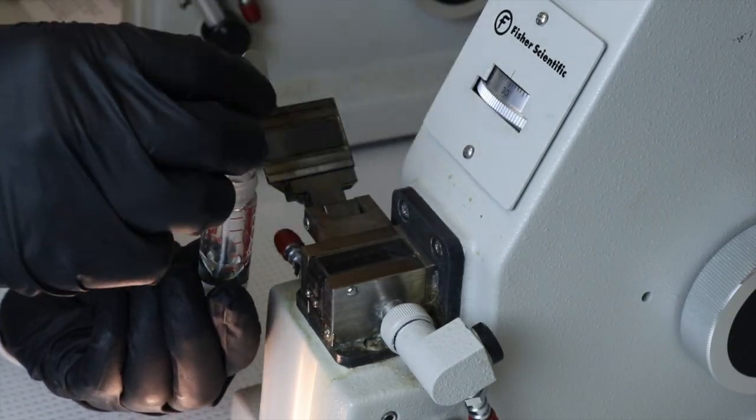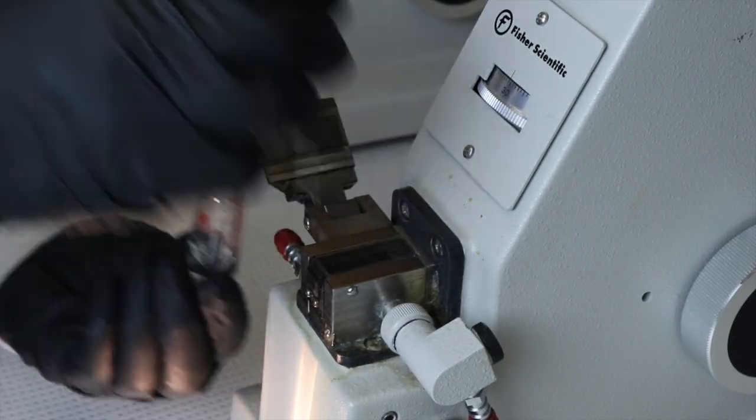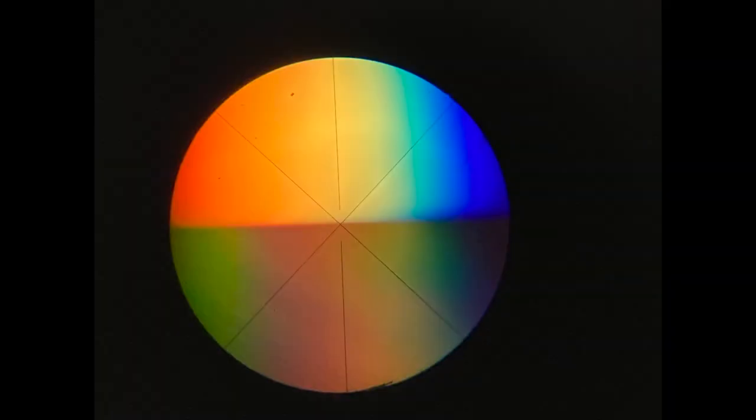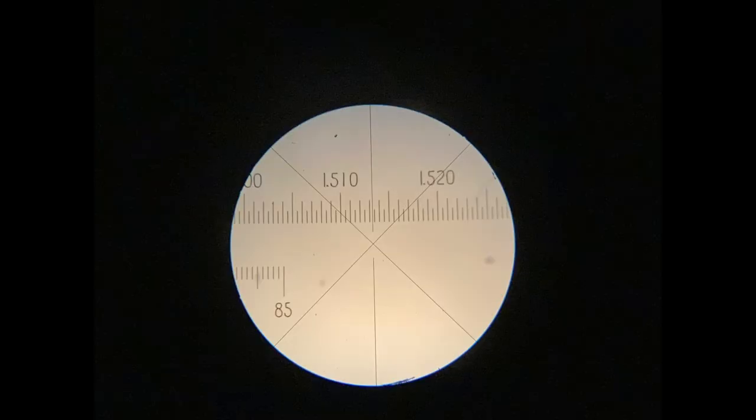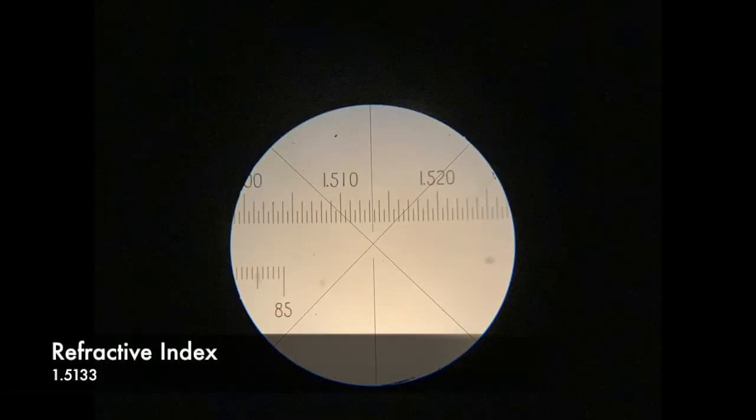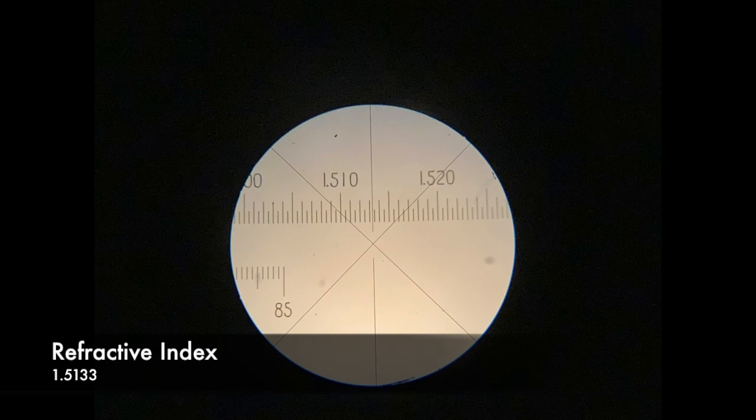Finally, I'll measure the refractive index, so I'll place some of the product onto these crystals. And then looking through, I'll place the line separating the light and dark hemispheres right through the crosshairs, and look at the index given. It's a little higher than literature value, but it's still pretty dang close.